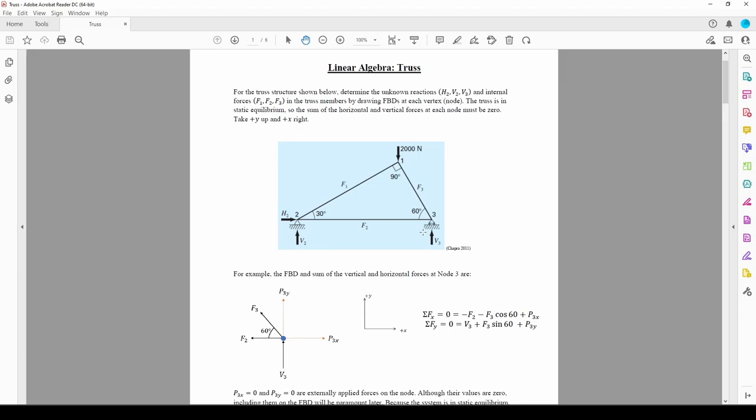We externally apply a downwards 2000 newton force to node 1. When the load is applied, it's dispersed throughout the three truss members, F1, F2, and F3. Some of the load is also shouldered by the three reaction forces, H2, V2, and V3. The gist of the problem is to solve for these six forces.